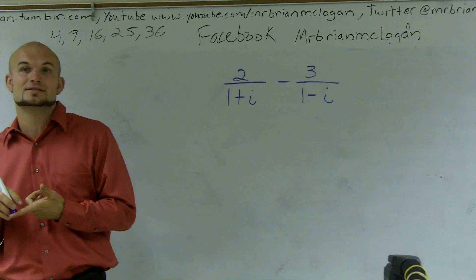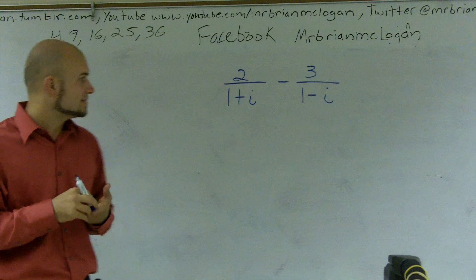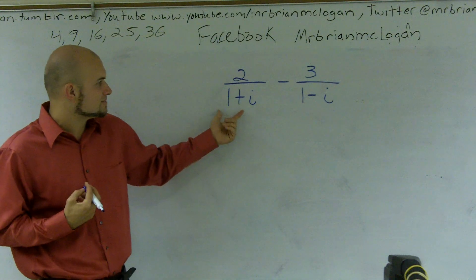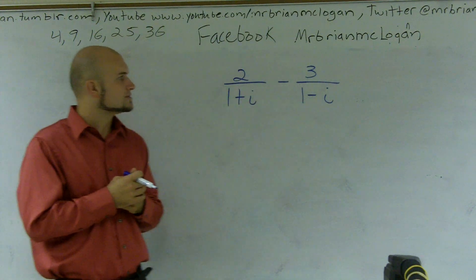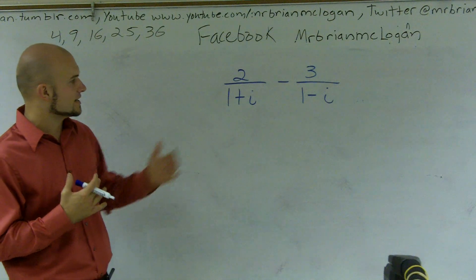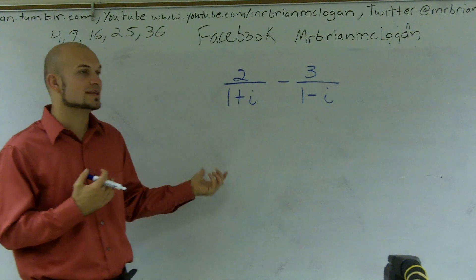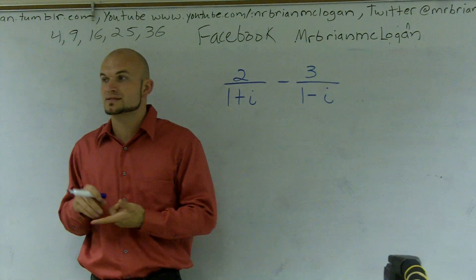Either by, like I said, rationalize the denominator by multiplying by i. But here we actually have an expression 1 plus i and here we have 1 minus i. So one thing I want to look at is I need to get rid of the i's. And to get rid of the i, we talk about multiplying by its conjugate.